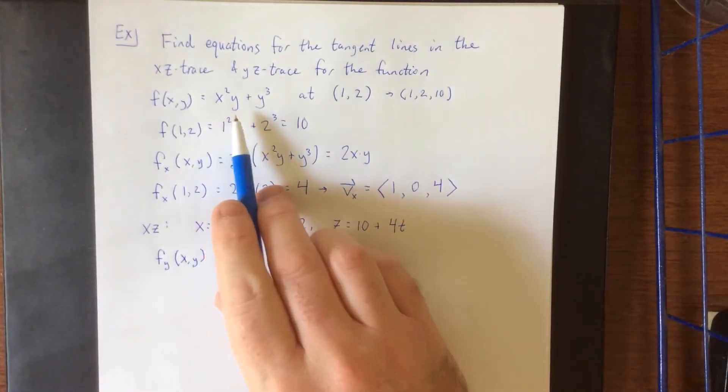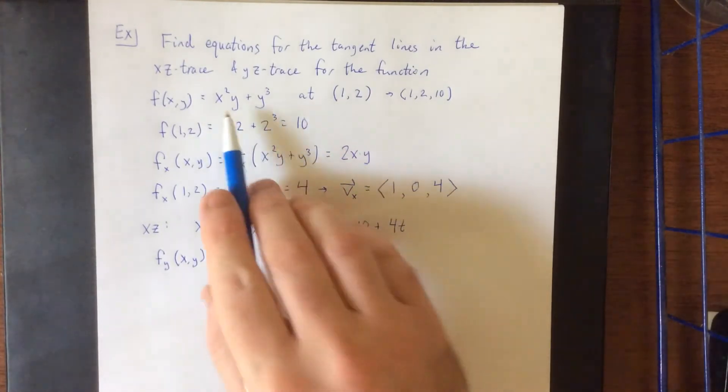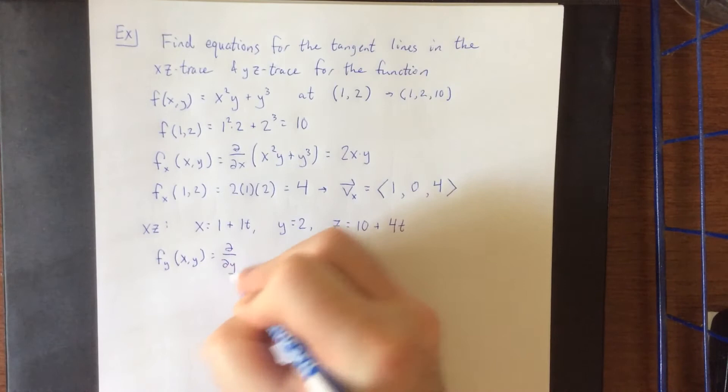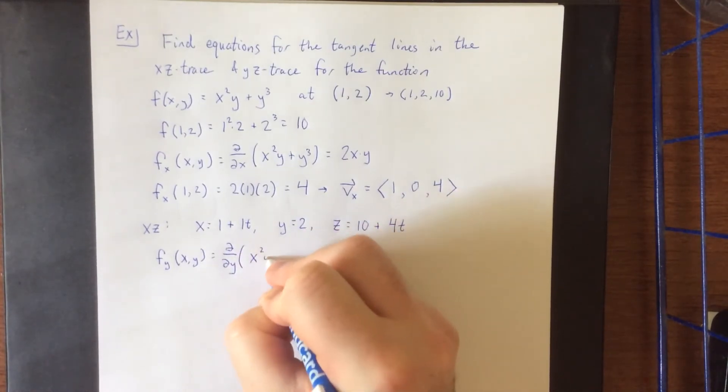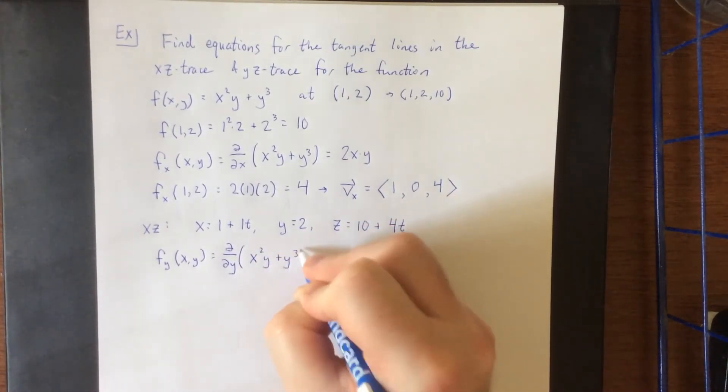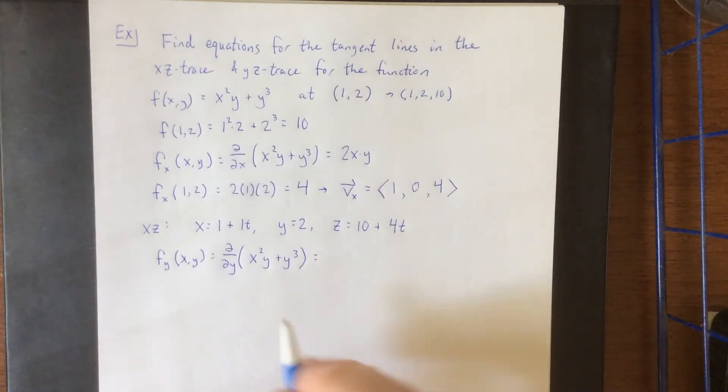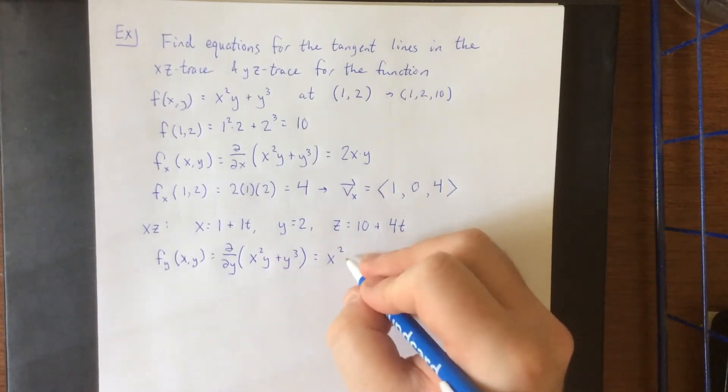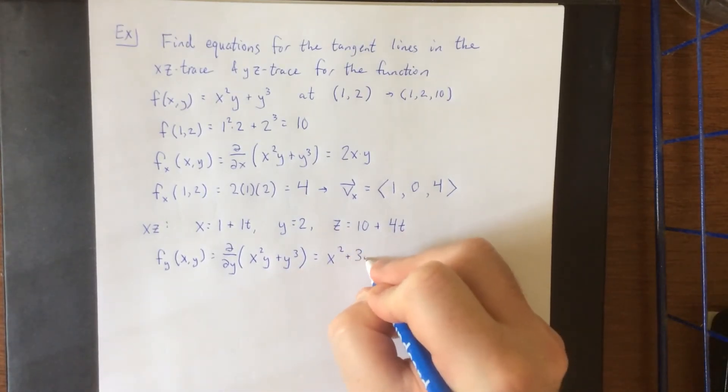Heading back to the original function x squared y plus y cubed differentiating with respect to y this time. We will get a constant times y that would be the value of the constant and the derivative of y cubed. That'll be 3y squared.